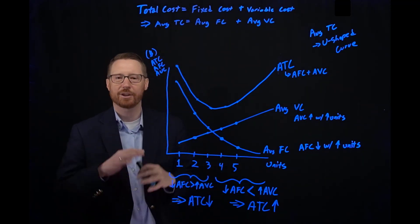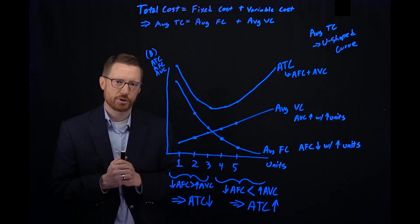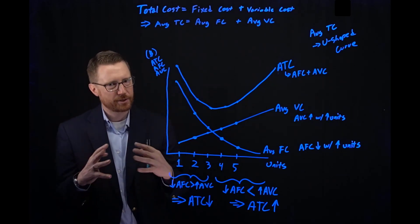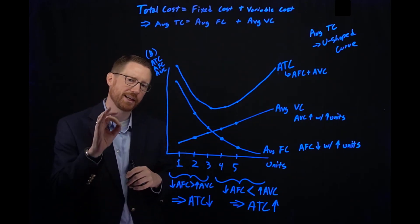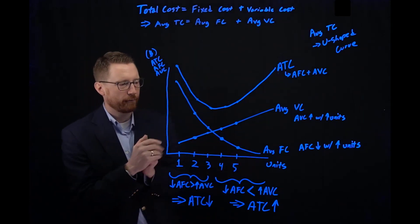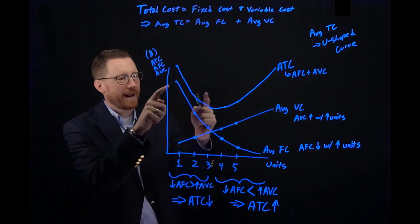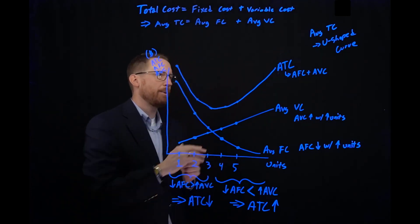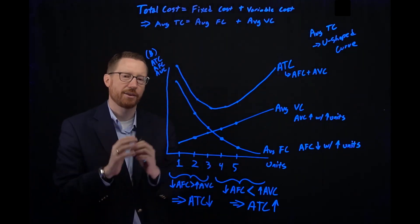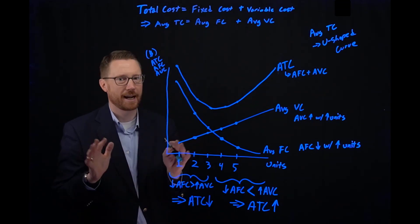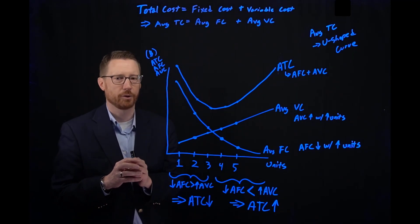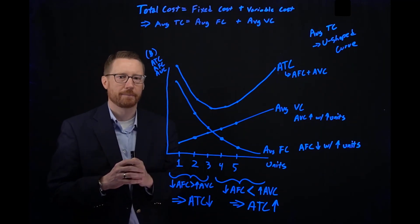I understand it's a lot for sure. What I'd encourage you to do is stop, go back, watch this again, go through it slowly, and think at every step: do I understand where average fixed cost comes from? Where average variable cost comes from? And when I add them together, why do I see this U-shape in the average total cost? I think you'll get there with a little bit of time and thought — it's certainly not something you can just memorize your way through. Think your way through it. Thank you, and we'll see you next time.